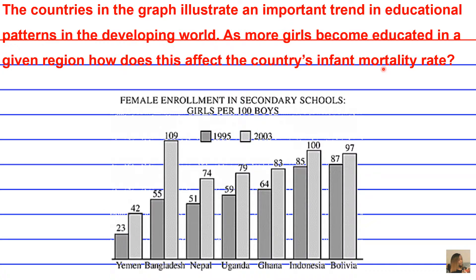In short, it's the number of deaths that occur among live births under one year of age for a region, expressed per 1,000 live births for that given region. With that definition covered, by now you should have formulated and written out a concise answer to this question.